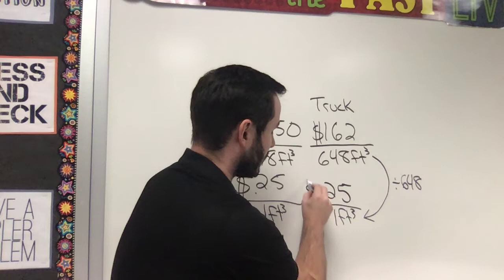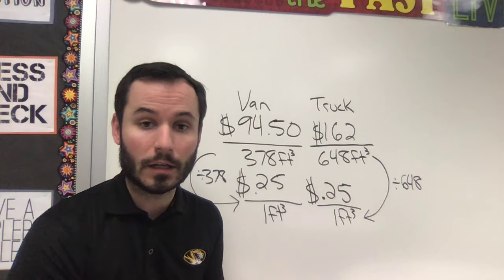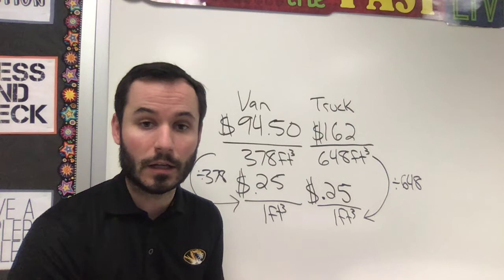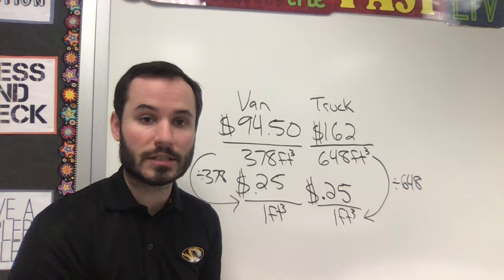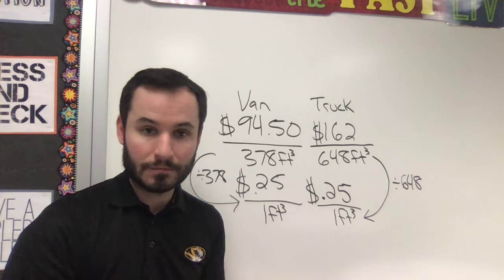Now we're looking at how much one cubic foot costs in the van and the truck, and they're both the same — 25 cents per cubic foot. So the better deal is... they're the same deal. You're actually getting the same amount of space for your money. Whether you need the van's space or the truck's space, it's 25 cents per cubic foot either way. On Part A, when it asks which is the better deal, they're both the same — neither one is cheaper than the other.